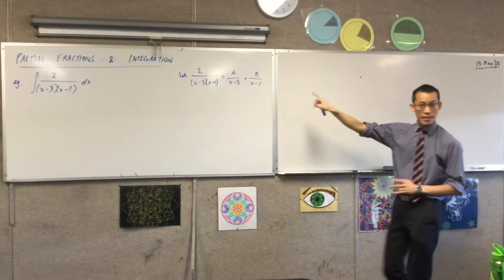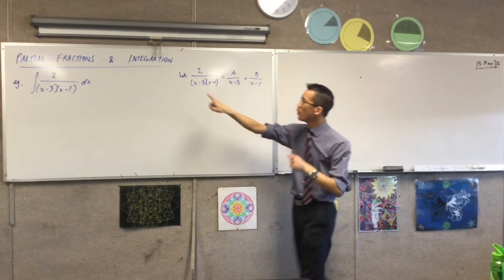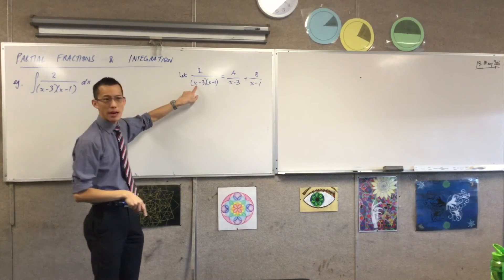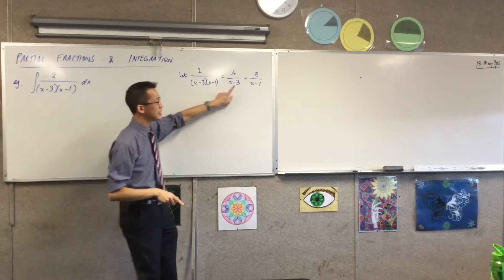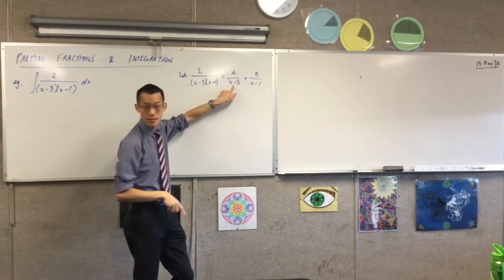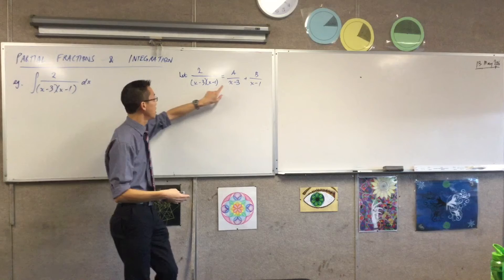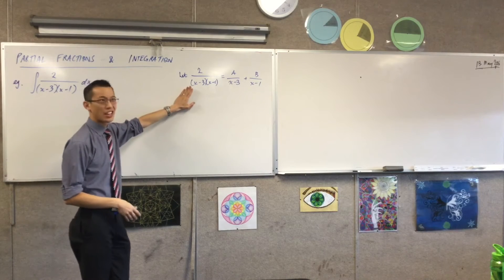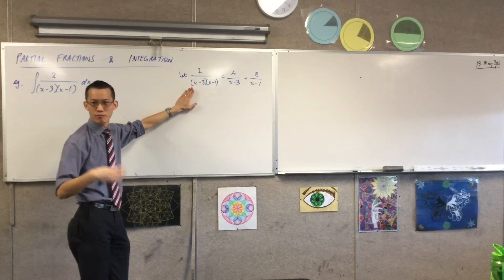Just while we're looking at this, suppose this was not x minus 3. Suppose it was x squared minus 3. How would that be different over here? If this denominator here, if my partial fraction ends up with, actually, maybe x squared plus 3, because I can't factorize that any further in the real domain.